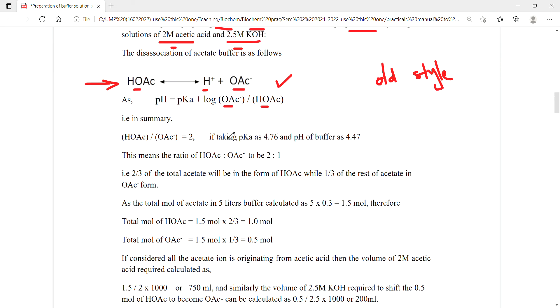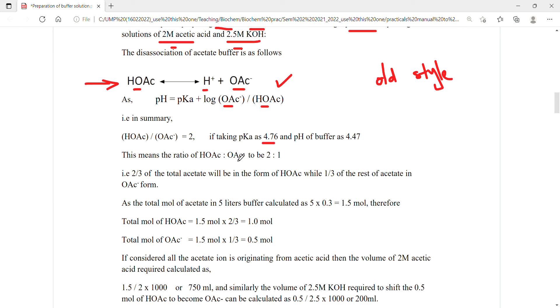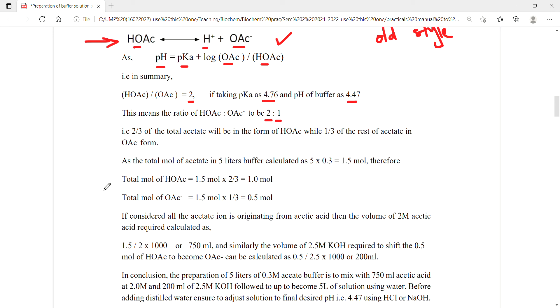So you can see if you already know the pKa of acetate buffer is 4.76 so you put it here and then you want to achieve 4.47 as the final pH of your buffer. Therefore you put here and then you work out this equation and then you do antilog using a calculator. Finally you arrive at 2. So and then now you know this means the ratio of this acetic acid over its ion is 2 to 1. And this also means two-thirds of the acetate will be as acetic acid while one-third of the rest of the acetate in the form of its ion.